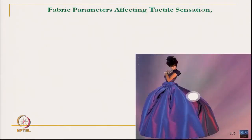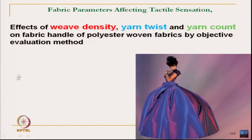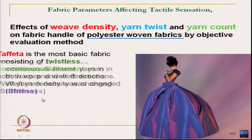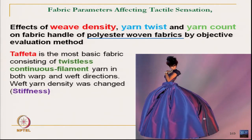As mentioned in the last class, this study talks about the density of yarn, weave density, yarn twist and yarn count. Only polyester filament — continuous filament — has been used in woven fabric. So all the fabrics in this study are polyester continuous filament woven fabrics.